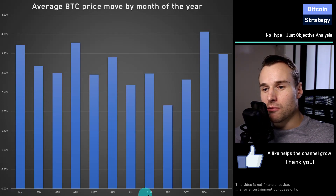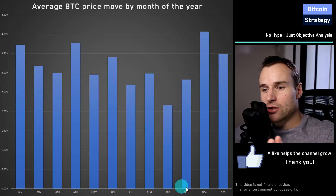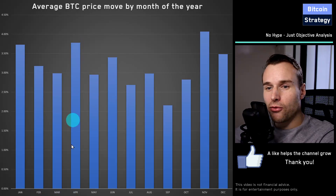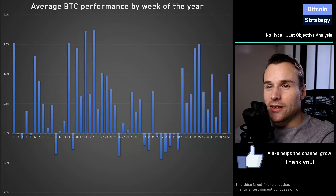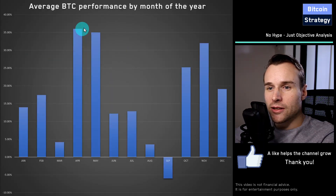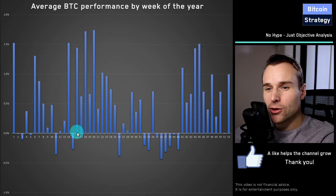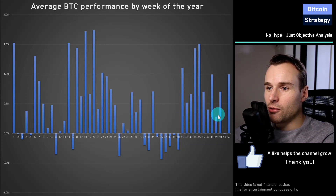Now we can zoom in further — instead of looking at individual months, we can look at weeks in the year, from week one to week 52. This adds granularity, giving us four bars instead of one for each month. Looking at average Bitcoin performance by week of the year, not just in monthly terms but also at the weekly level, we see that individual weeks in the spring tend to be consistently positive — not big spikes followed by negatives, but pretty consistent positive spring performance. The same goes for end of year Q4 — almost every week is positive, so it seems to make sense to be in the market during these times.